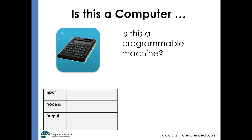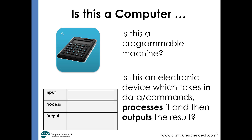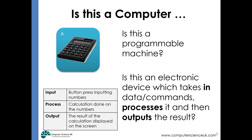Is a calculator a programmable machine? Yes, of course it is — it's a machine we can program to do different calculations. Is it an electronic device which takes in data, takes in commands, processes them, and produces a result? Yes. We tap buttons to put different numbers and operators into the device, it makes decisions based on those and produces outputs. The input is buttons being pressed to enter numbers, the process is the calculations performed, and the output is the result displayed on screen. So yes, we can consider a calculator as being a computer.